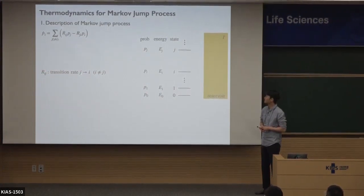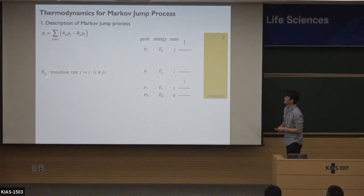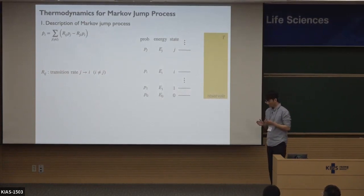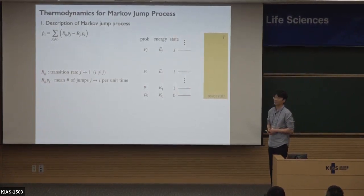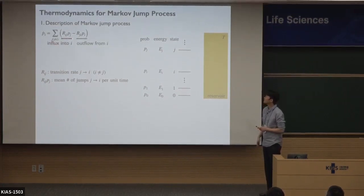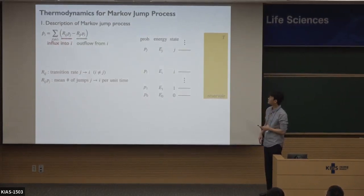Be careful about the order of these indices. Here, I is not equal to J, because this is a transition rate. This one multiplied by probability means the average number of jumps from state J to state I per unit time. So this first term means influx into state I, and the second term means outflow from state I.